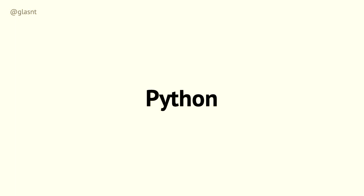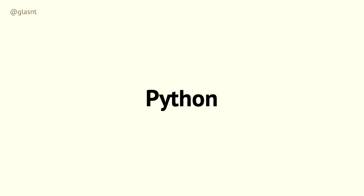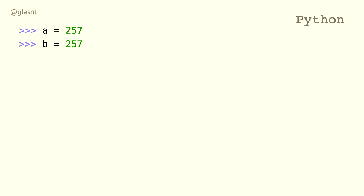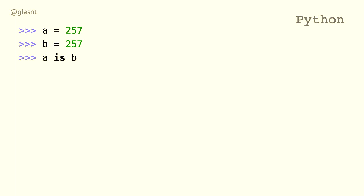Let's talk about Python. In Python, if I have the variable A as 256 and the variable B as 256, is A B? Hands up for true, hands up for false. It's true. If I have the variable A as 257 and the variable B as 257, is A B? It's false. However, if I declare them on the same line and check it, they are.